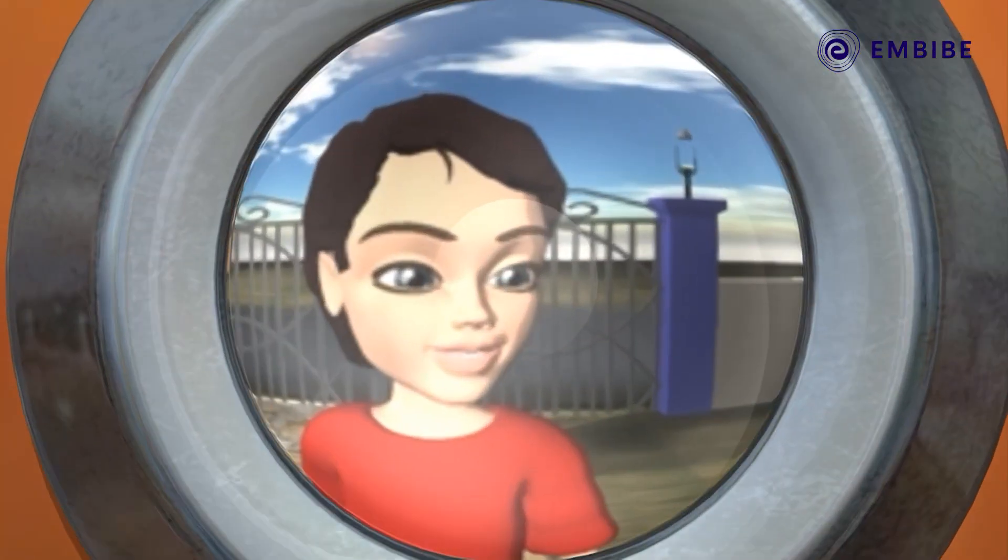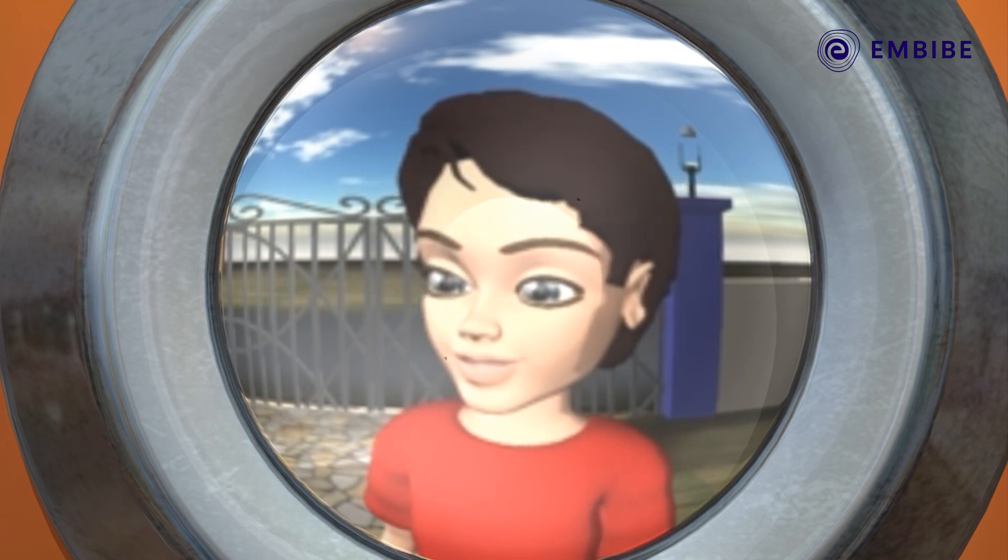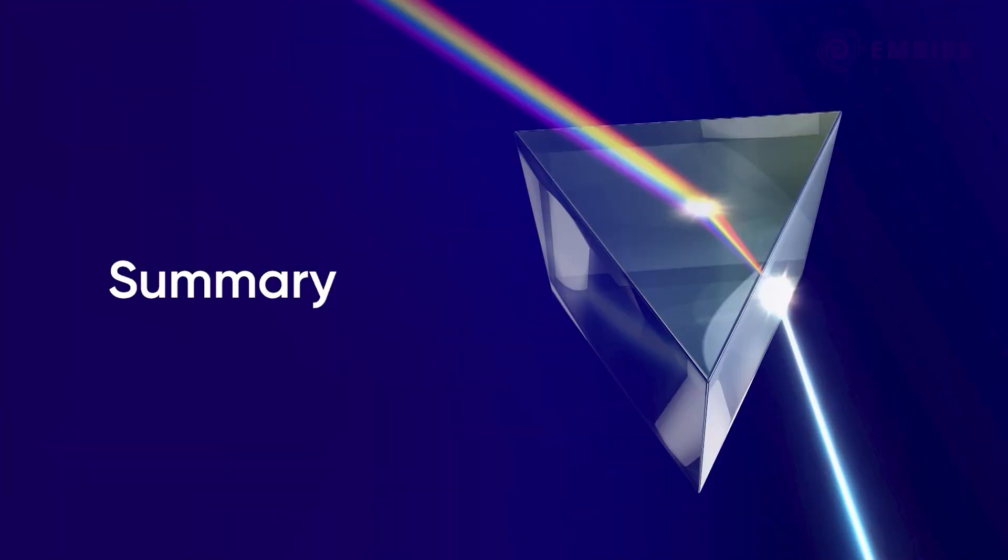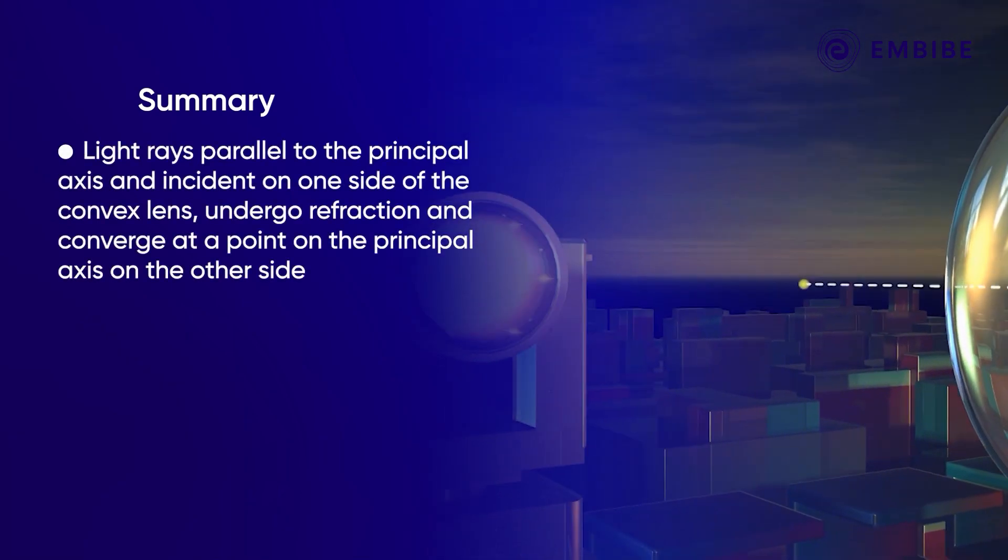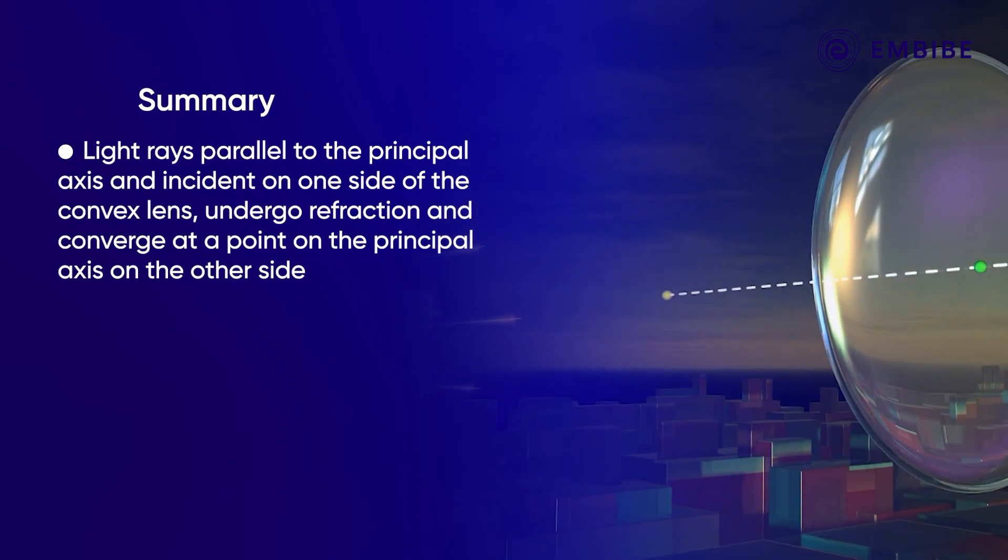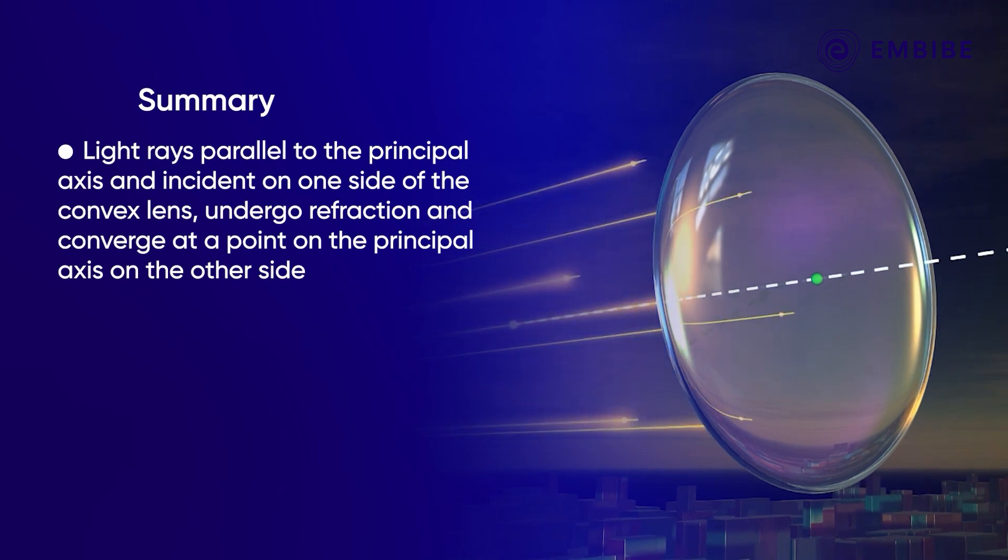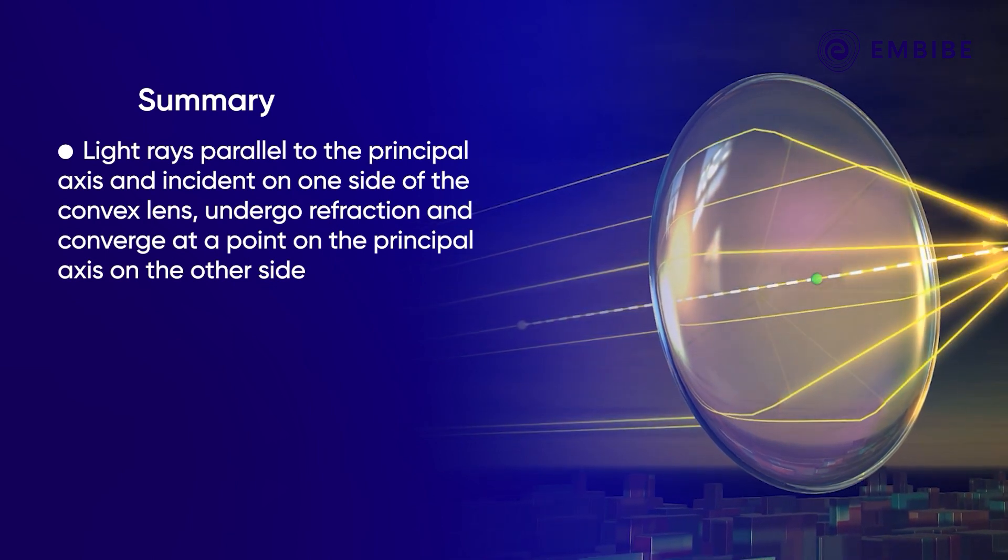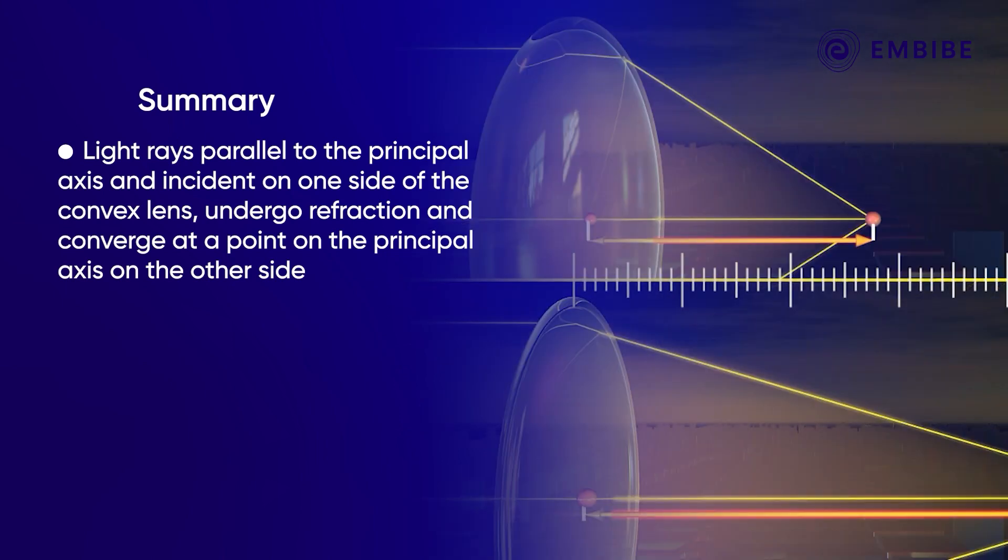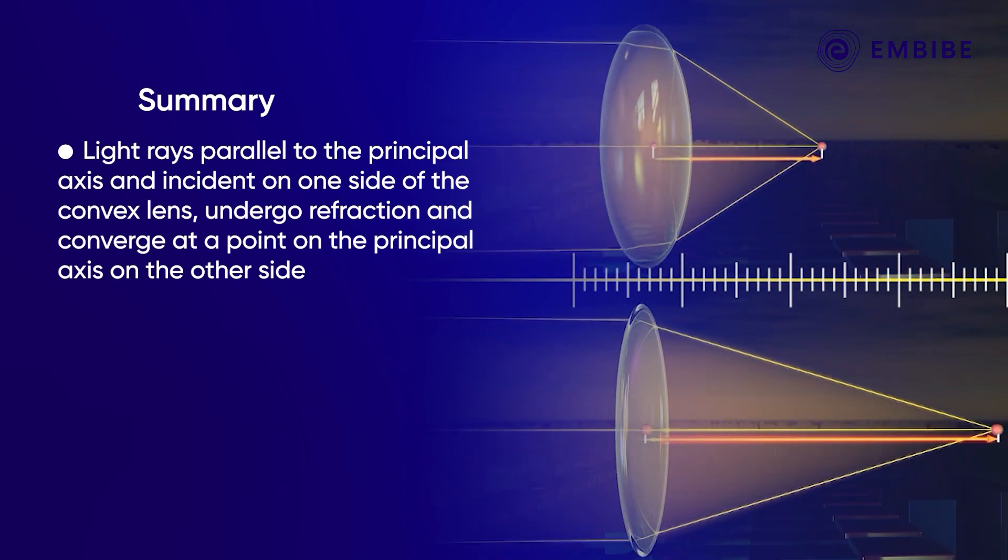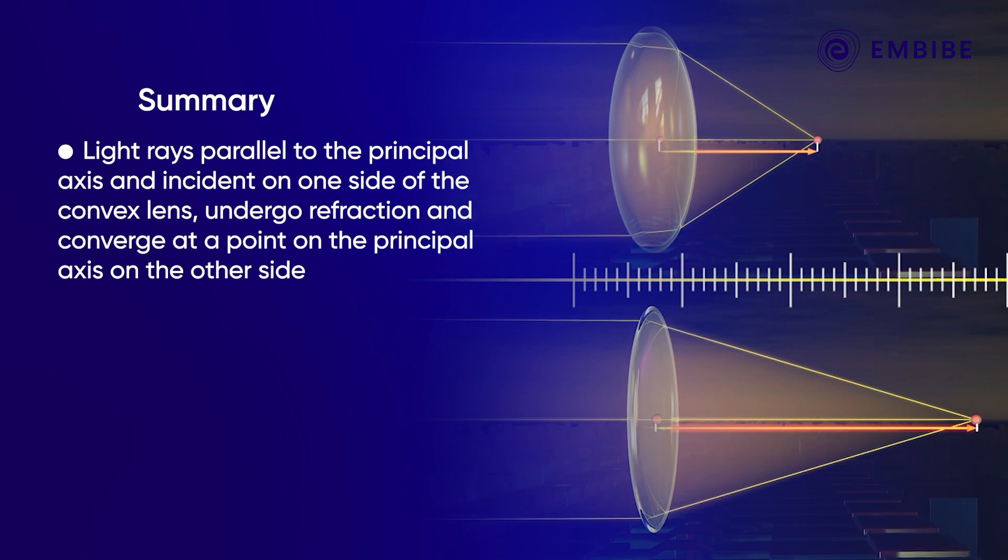To summarize, we have understood that light rays parallel to the principal axis and incident on one side of the convex lens undergo refraction and converge at a point on the principal axis on the other side. The focal length of the thinner lens is greater than that of the thicker lens.